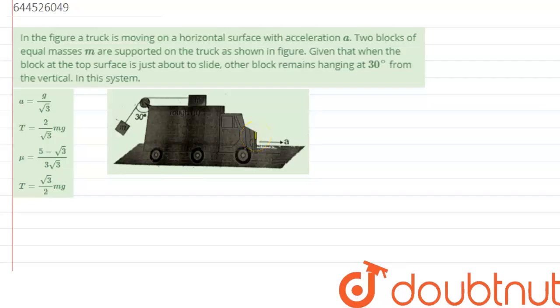Hi everyone, so we are given with a question which says, in the figure, a truck is moving on a horizontal surface with acceleration A.